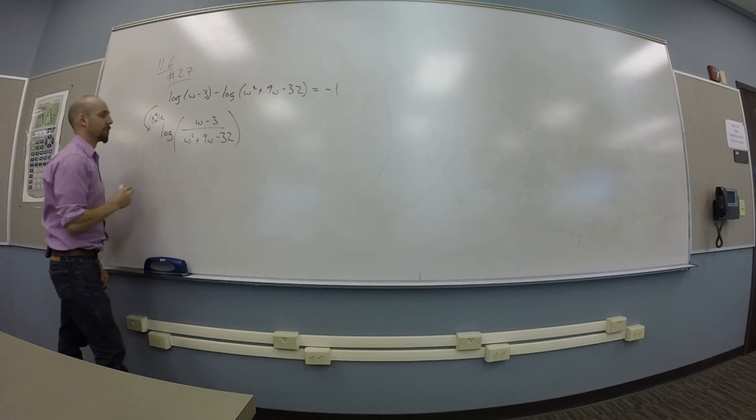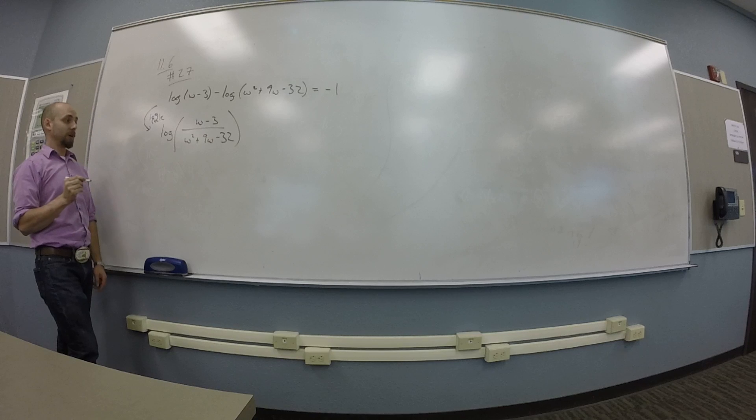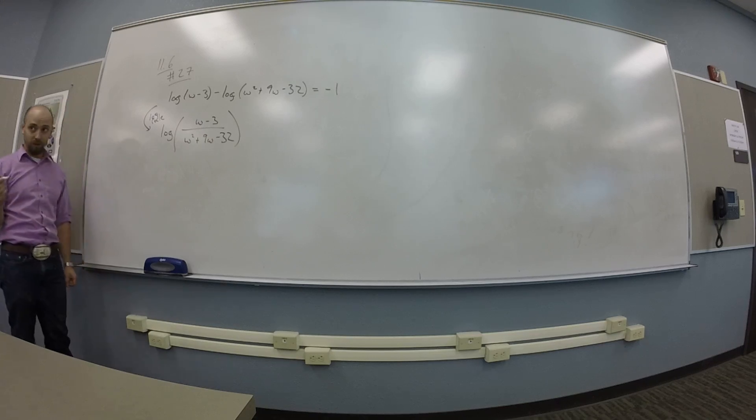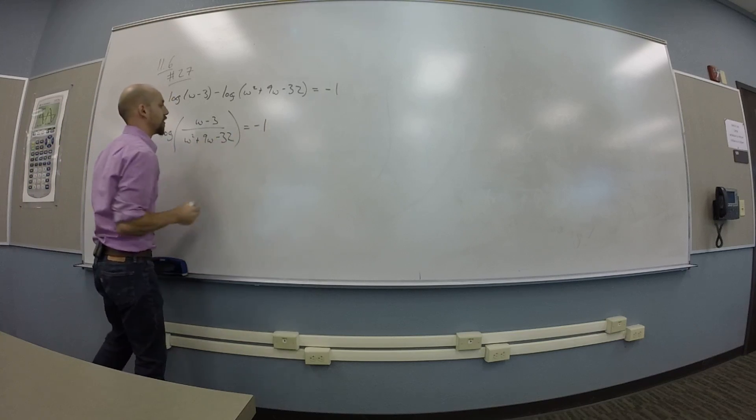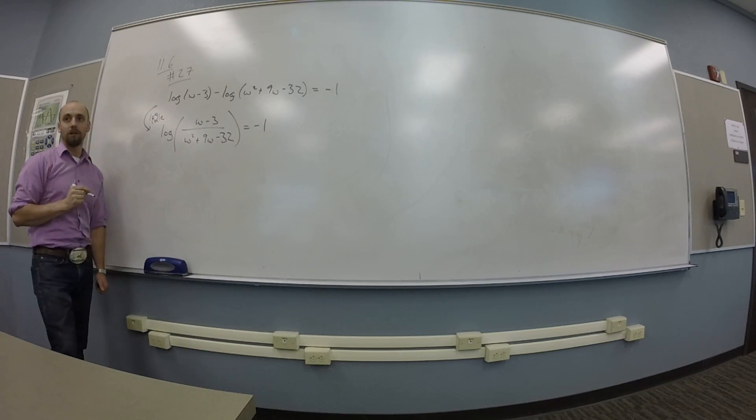Okay, so I'm getting log of W minus 3 over W squared plus 9W minus 32 equals negative 1. Negative 1. Okay, now what?